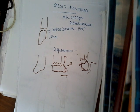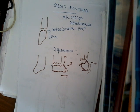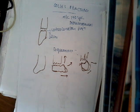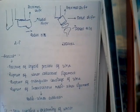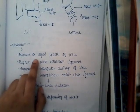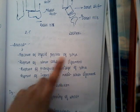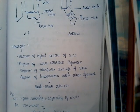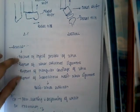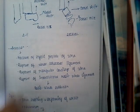Colles fracture is also associated with other types of injuries. It can be associated with fracture of the styloid process of ulna, rupture of the ulnar collateral ligament, rupture of the triangular cartilage of ulna, and rupture of the interosseous radio-ulnar ligament. Due to all these ruptures, there can be radio-ulnar subluxation.